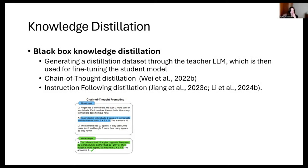There are two black box techniques. First, chain of thought — where you're transferring the reasoning abilities, specifically the step-by-step reasoning process. The student model through training learns to produce similar reasoning chains and final answers. Second, instruction following — prompts that demonstrate how the teacher model follows instructions, which the student learns to mimic. Teacher prompts are typically more detailed and explicit, asking for a step-by-step process, while student prompts are simpler.